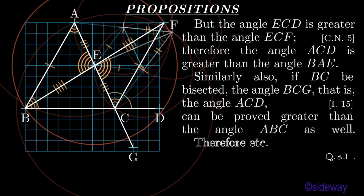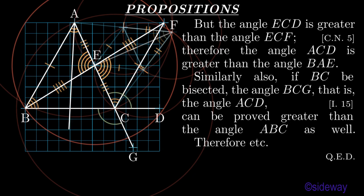Similarly also, if BC be bisected, the angle BCG — that is, the angle ACD — by Book 1 Proposition 15, can be proved greater than the angle ABC as well. Therefore, etc. What was to be shown?